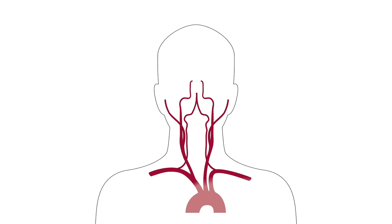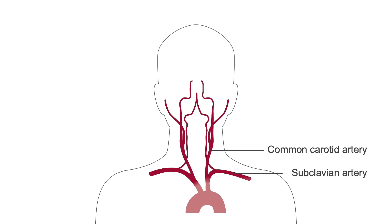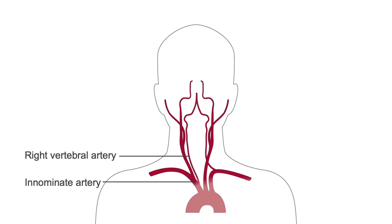There are a few anatomical variations in this territory to be aware of. In rare cases, the left common carotid artery and subclavian artery may share a common origin instead of both arising from the aortic arch. In addition, the left vertebral artery can arise directly from the aortic arch instead of from the subclavian artery, but this is particularly rare on the right side. Lastly, the right vertebral artery may originate at the distal end of the innominate artery instead of arising from the subclavian artery.